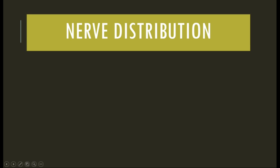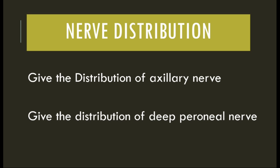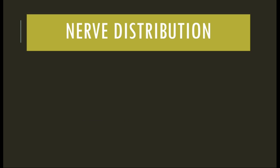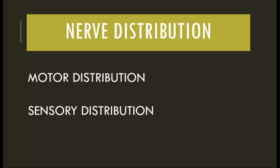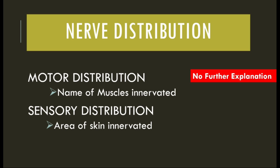Finally, guidance on how to answer nerve distribution questions in exams. Always give two headings: motor distribution and sensory distribution. Under motor distribution, write only the names of the muscles supplied. Under sensory distribution, specify the area of skin innervated. No need to write the course, origin, or root value of the nerve — just the two headings with muscles and skin area.